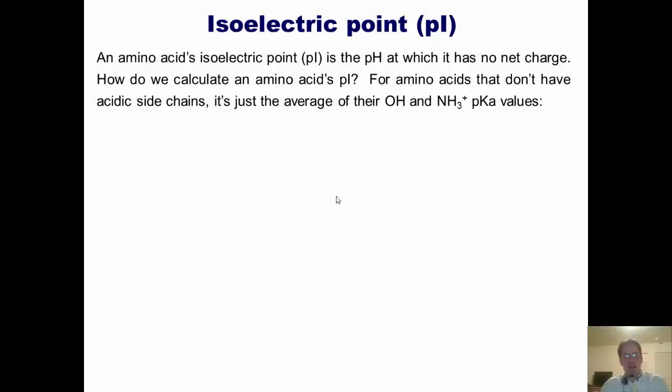We now arrive at the subject of an amino acid's isoelectric point, which is abbreviated as pI. Magnum pI? No, I'm just kidding. It's just regular pI. Simply defined, an amino acid's isoelectric point is the pH at which that amino acid has no net charge.